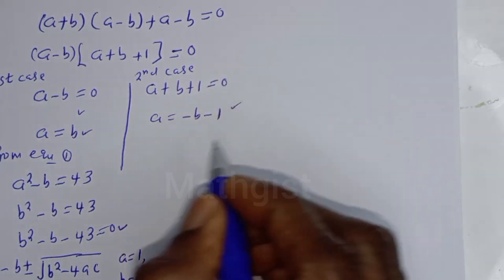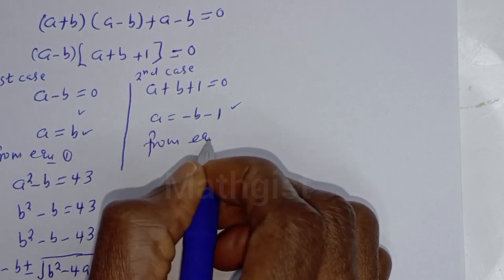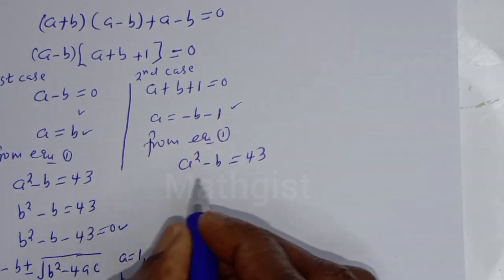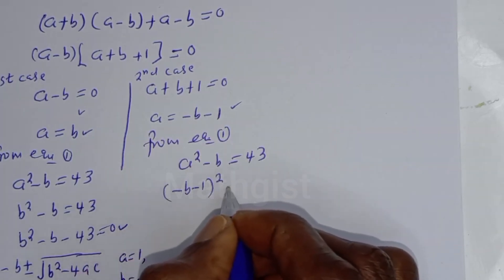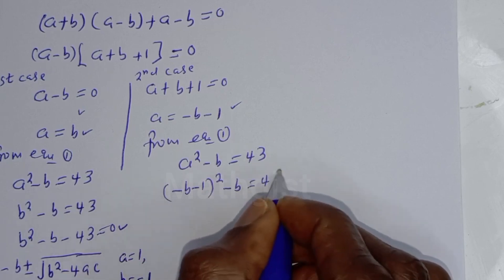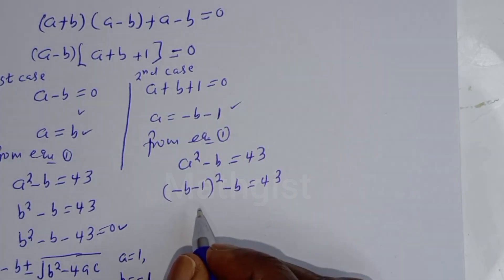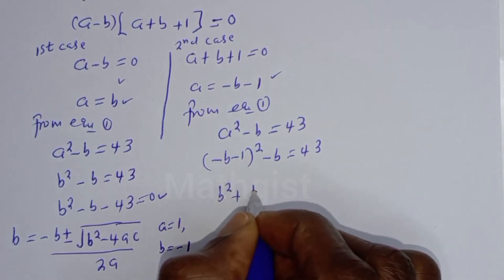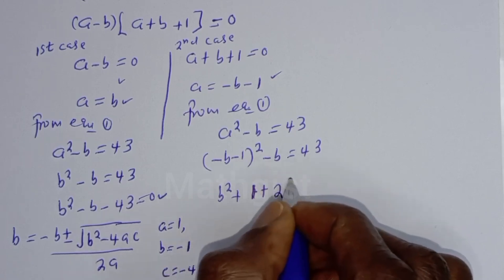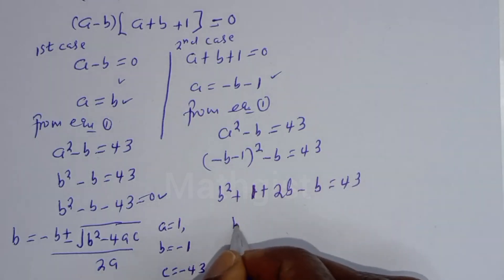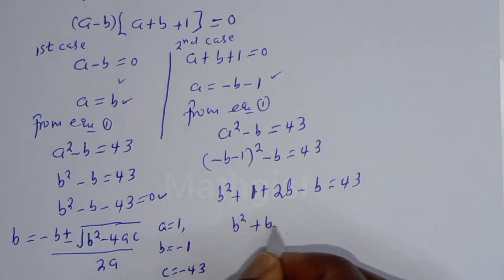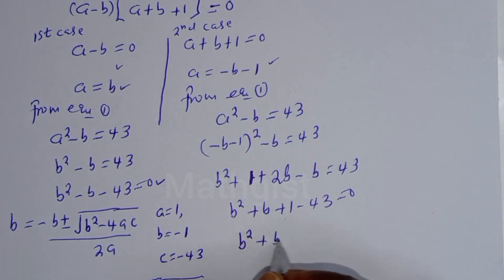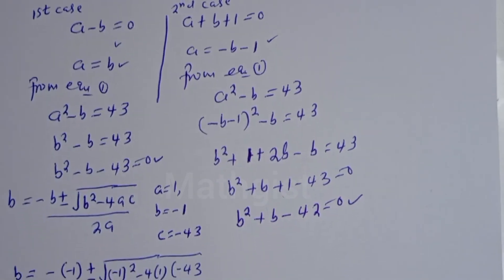From the second case and equation 1, A squared minus B equals 43. Substituting A equals minus B minus 1, we get (minus B minus 1) squared minus B equals 43. Expanding: B squared plus 2B plus 1 minus B equals 43, so B squared plus B plus 1 minus 43 equals 0, giving B squared plus B minus 42 equals 0.